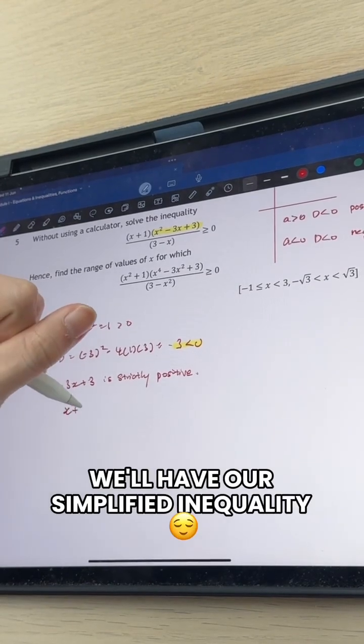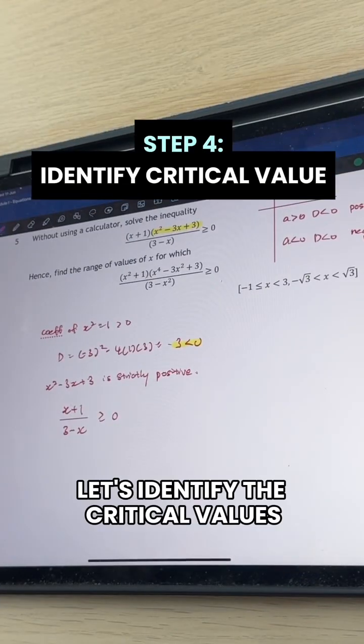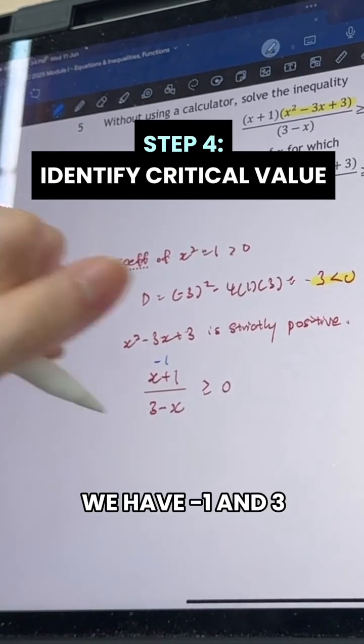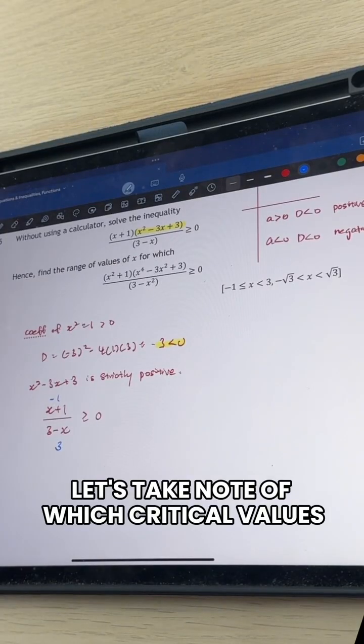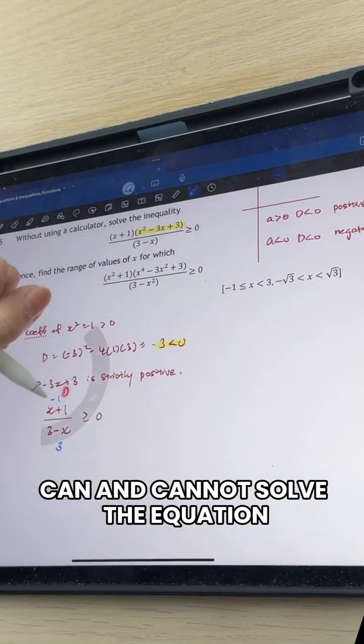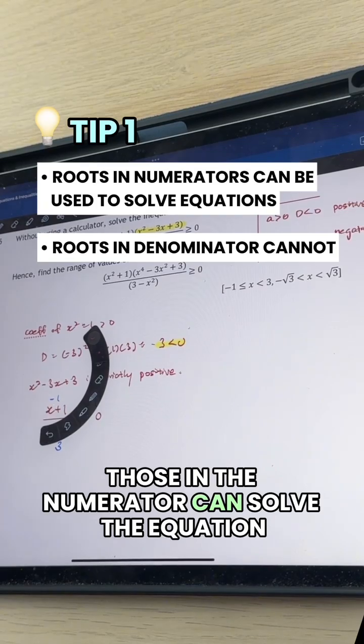And now we will have our simplified inequality. Now let's identify the critical values or we can say the roots of this equation. We have minus 1 and 3. Let's take note of which critical values can and cannot solve the equation. Those in the numerator can solve the equation. Those in the denominator cannot.